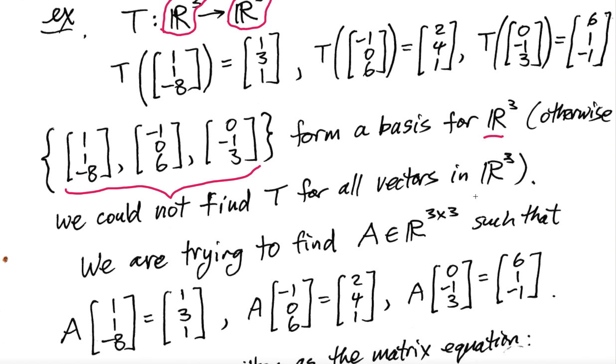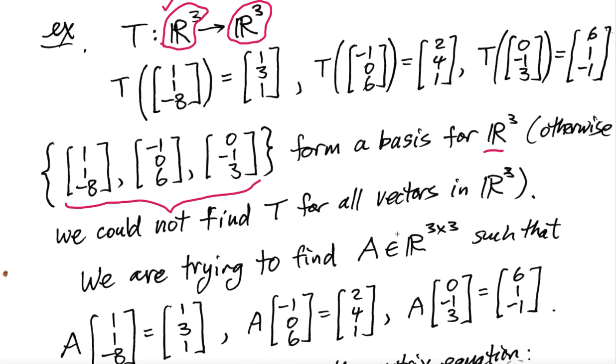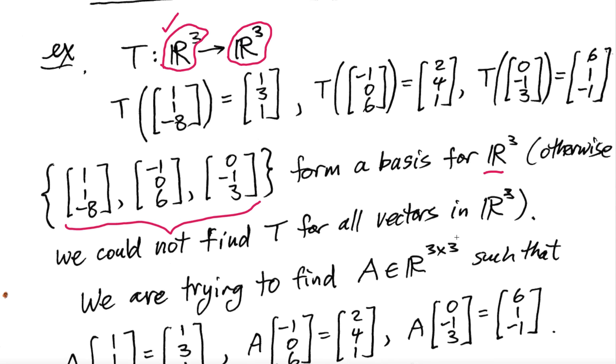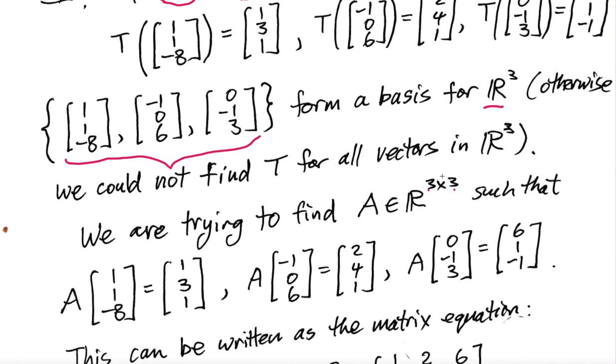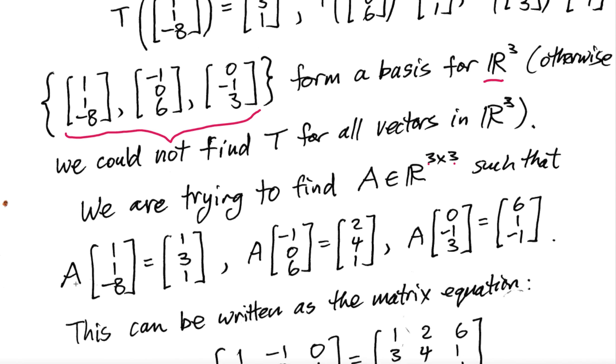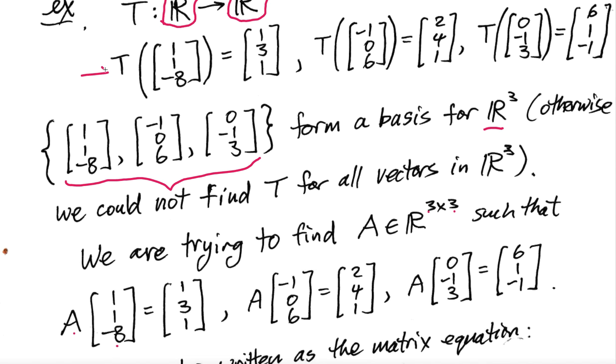Now what are we essentially trying to do? We're essentially trying to find the matrix associated with this transformation, with this linear operator. Notice that this is going to be a 3 by 3 matrix, because you're mapping into R³ from R³. Now, since my linear operator is essentially just a matrix product, A times (1, 1, -8) should be (1, 3, 1). That's just a restatement of that.